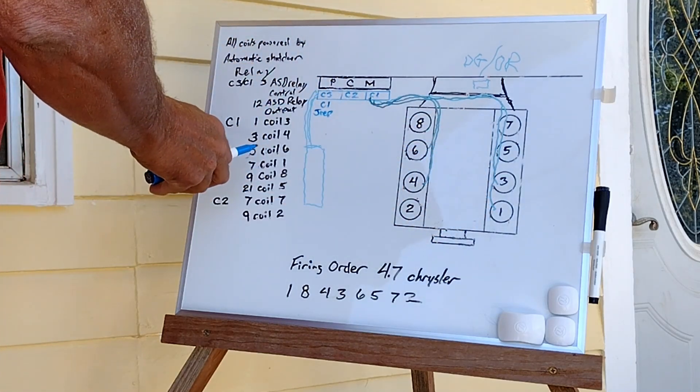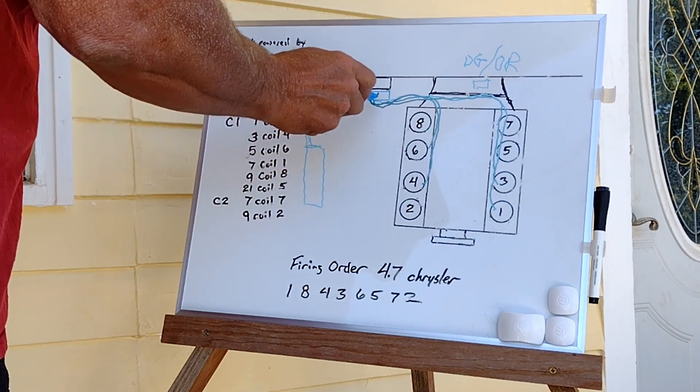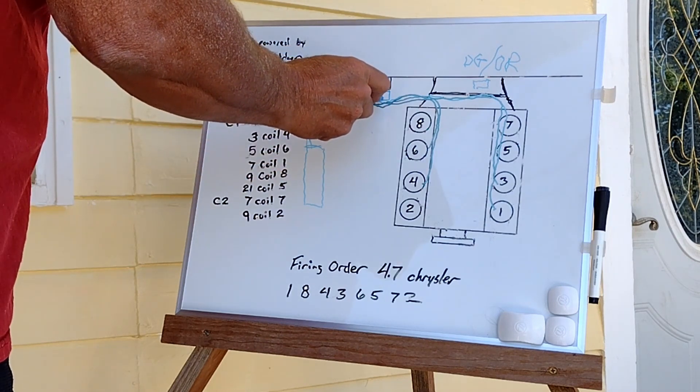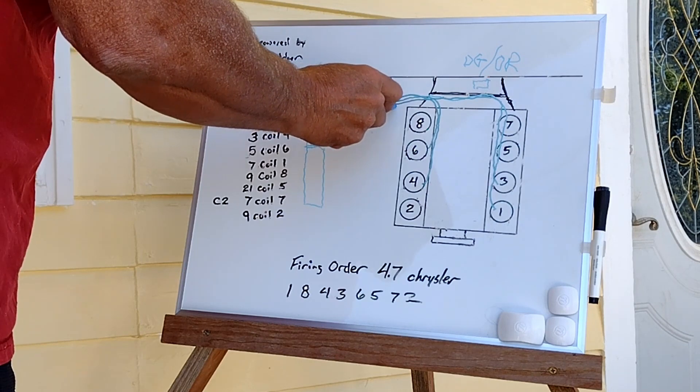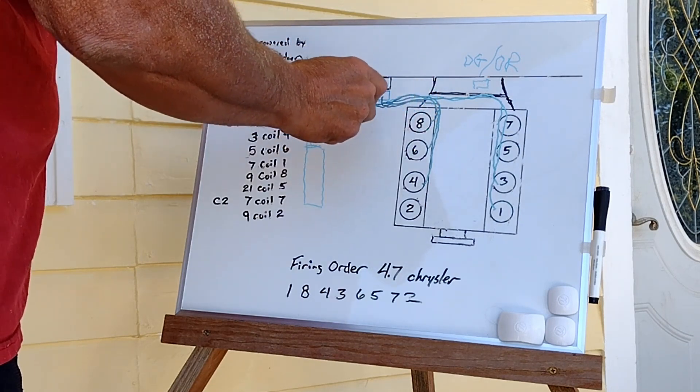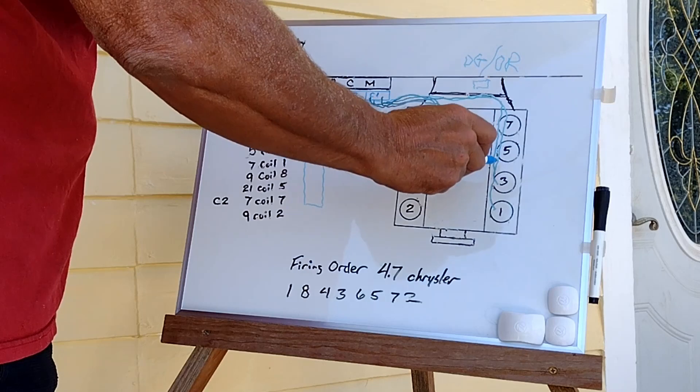You're going to take position nine, and you're going to take it to the number eight coil. It's going to be your shortest wire of the bunch. Route these so you can bundle them together.